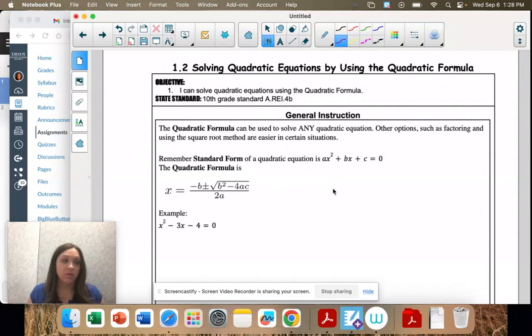So standard form is really important. It has to be in this form. So your x squared and the number next to x squared is a, followed by your x term. The number next to that is b. And then c is your constant. It's the number without x. And then must equal zero before you can do quadratic formula.